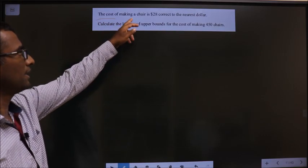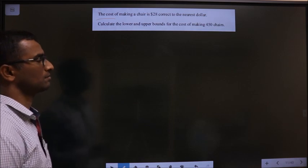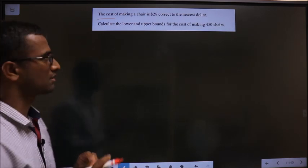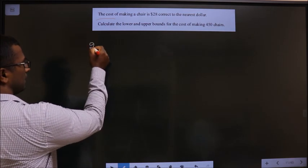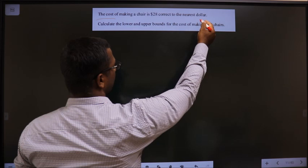The cost of making a chair is $28 correct to the nearest dollar. So let us write upper and lower bound for $28. So here it is $28. This is correct to the nearest dollar.